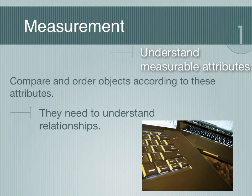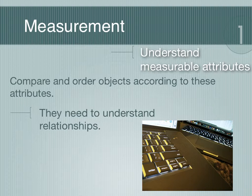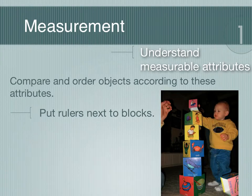What this really comes down to is relationships — this compared to that. It's not necessarily just a new computer versus an old computer like in the photo. It's more about: this person is taller than that person, this shoe is longer than that shoe. And that's really what we're getting at in the primary standard about understanding measurable attributes.